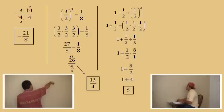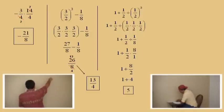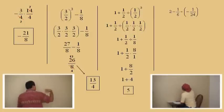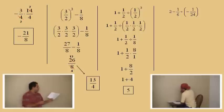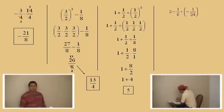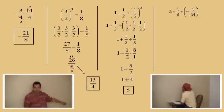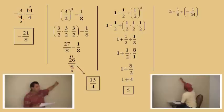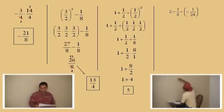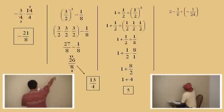Moving on to our next problem: 2 subtract 1 sixth divided by negative 1 over 24. What do we do first — the subtraction or the division? The division. But we're dividing with a fraction, so we're going to change that to multiplication and take the reciprocal.